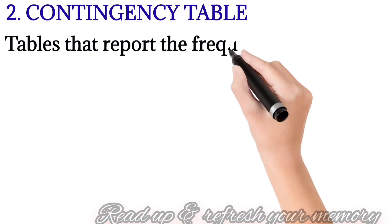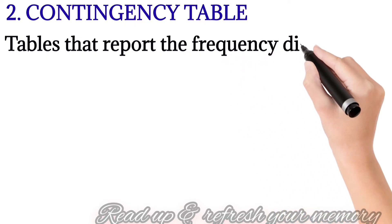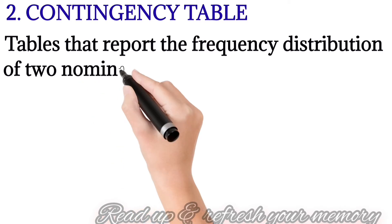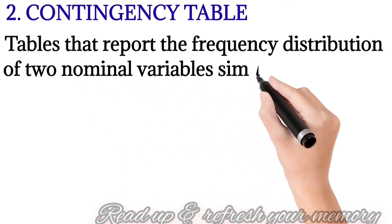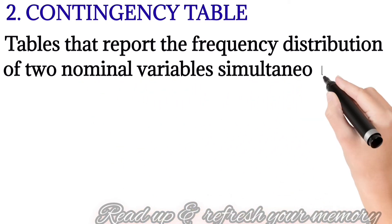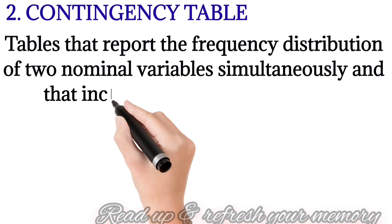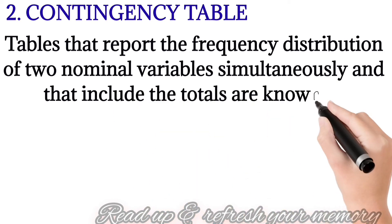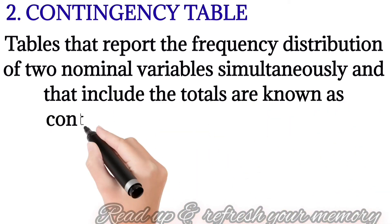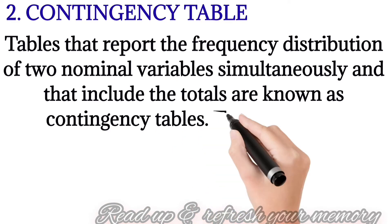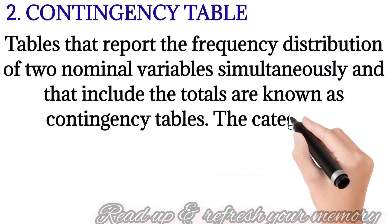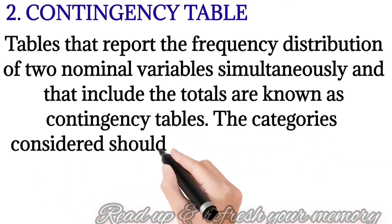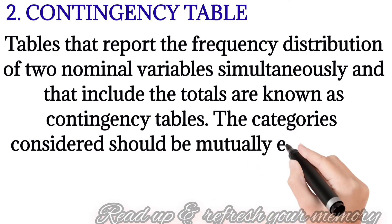Next, we move on to contingency table. What is a contingency table? It is a table that reports the frequency distribution of two nominal variables simultaneously. A nominal variable is a type of variable that categorizes a particular variable that is being measured.